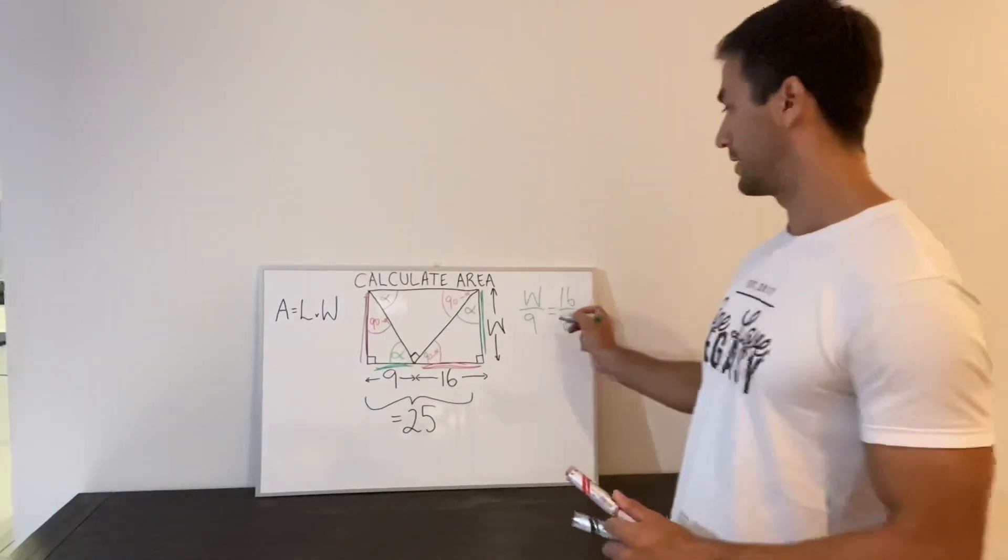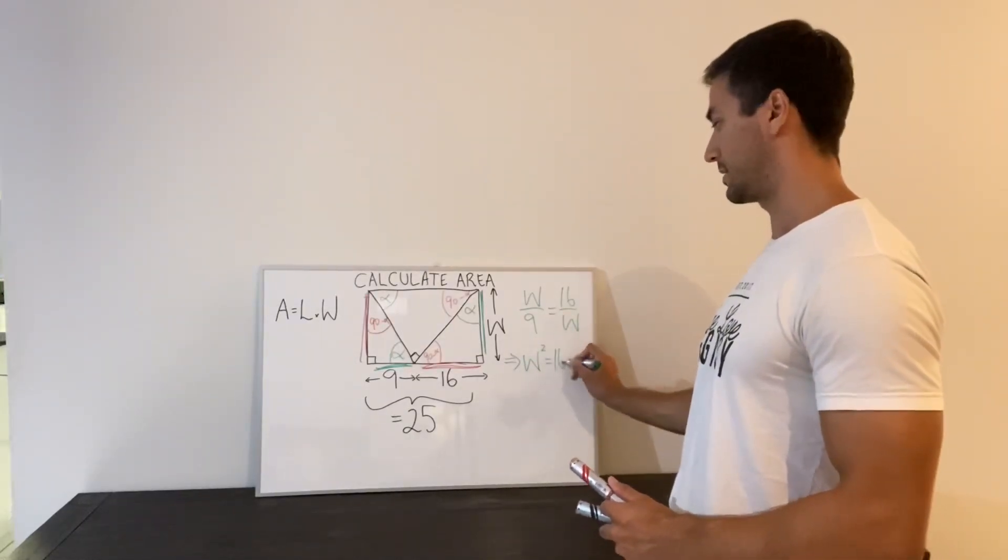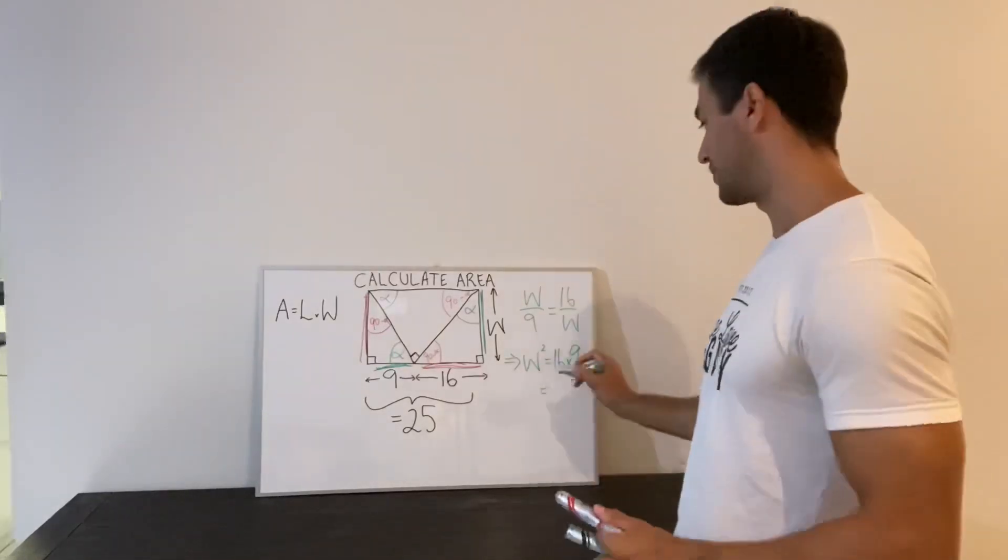Okay, and so we can rearrange that. That tells us that w squared is 16 times 9, which is 144.